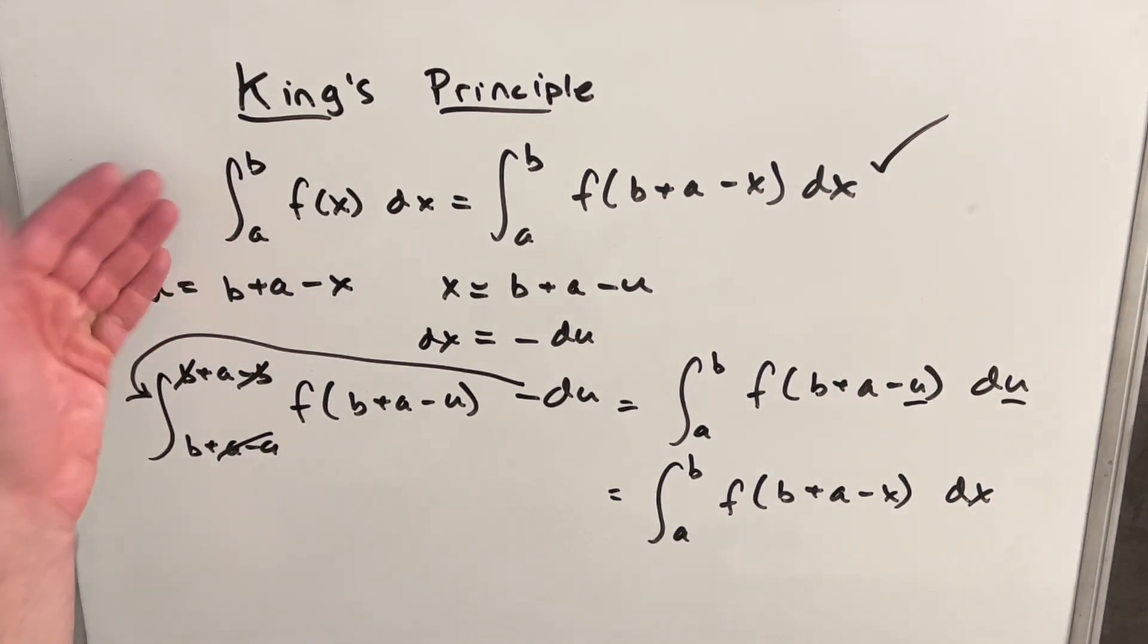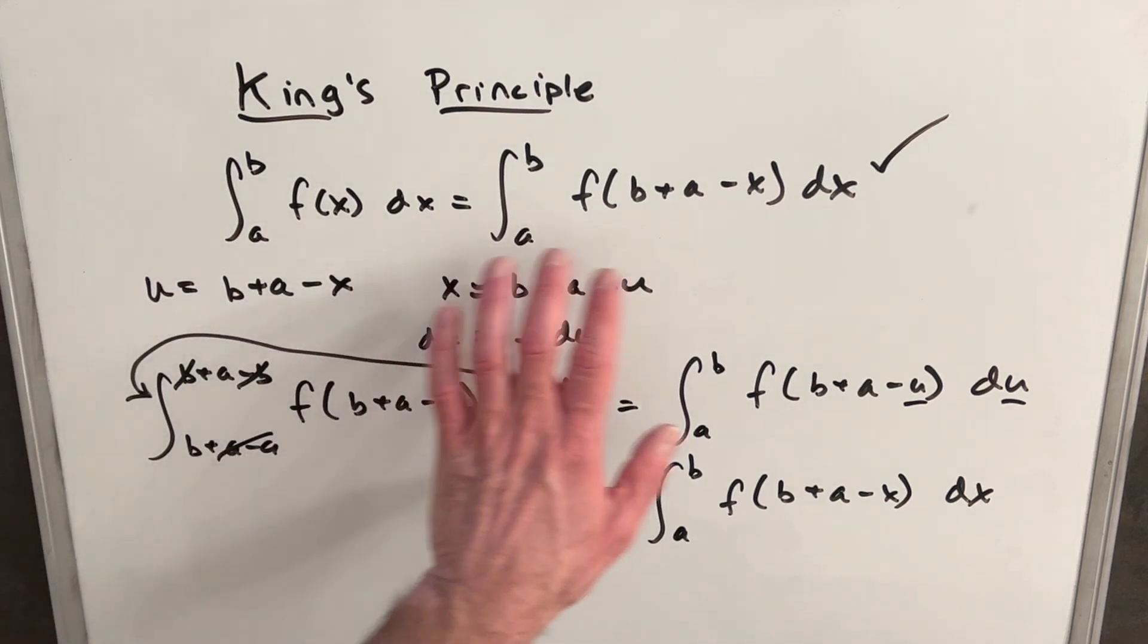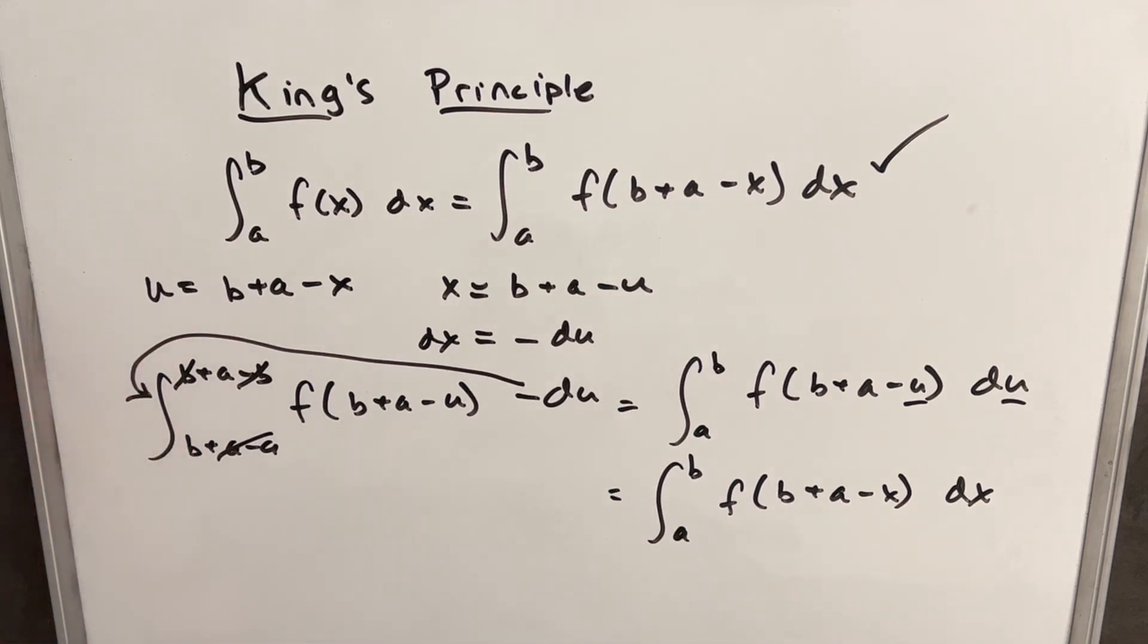And just a little side note, what does this actually do for us in an integral? Maybe in some cases not much, but it provides an identical copy of the integral that's going to look different. So I think in the next part of this proof, you might see where this is more valuable.